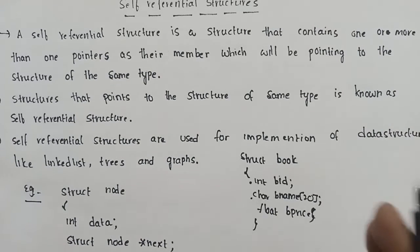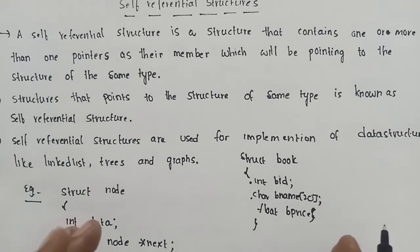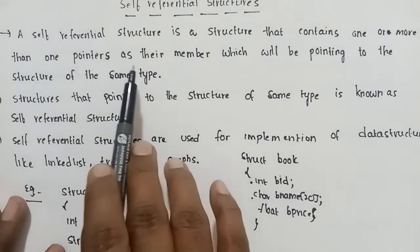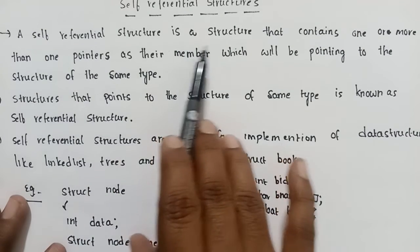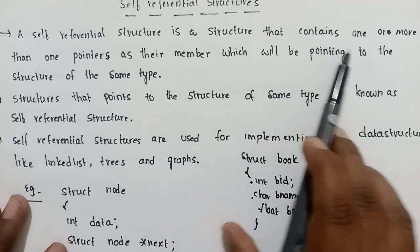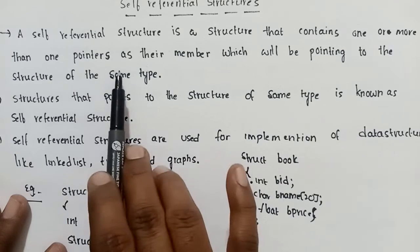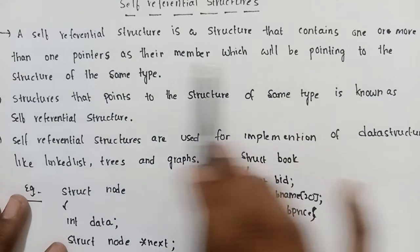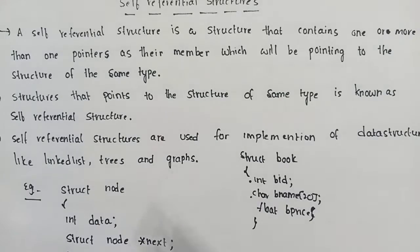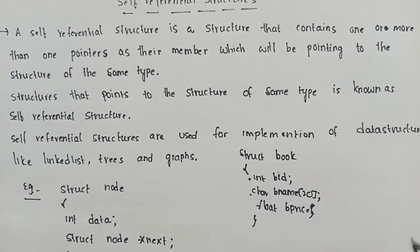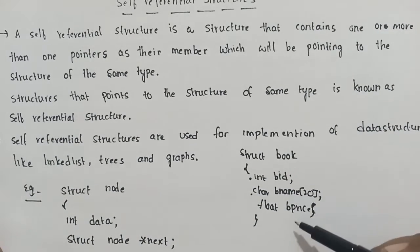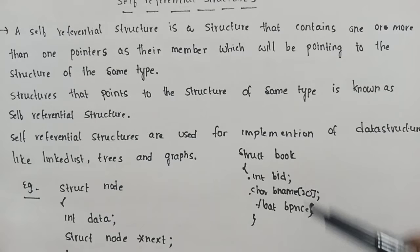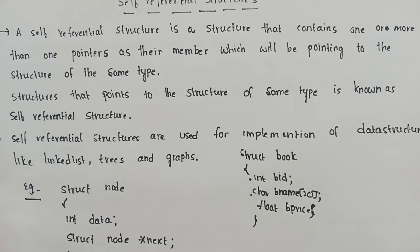Now, a self-referential structure is a structure that contains one or more than one pointers as its members, which will be pointing to a structure of the same type. The structure name and structure members define it.